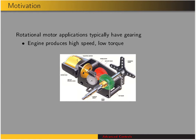The reason we need to add gearing to our analysis is that rotary motor applications typically have gearing, because the engines produce high speed and low torque. For example, this servo motor — we want to have high torque at the end so that we can turn things. Electric motors typically have much higher speed than we need and lower torque, so we add gearing to invert that relationship: we get higher torque on our output but lower speed.